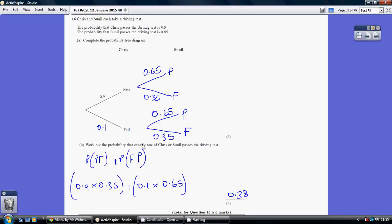Now our other possibility, the other way of getting exactly one of them passing, is Chris failing and Sunhill passing - fail-pass: 0.1, 0.65. Again, it's Chris failing and Sunhill passing, and so we multiply.